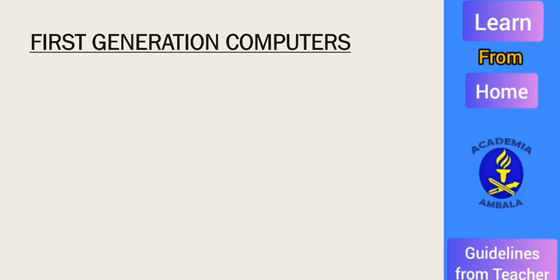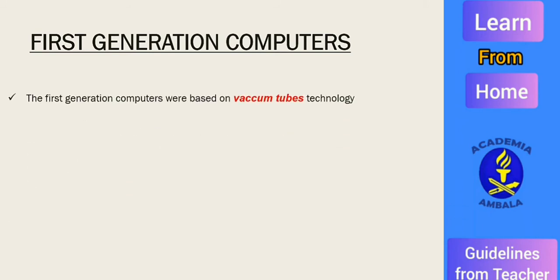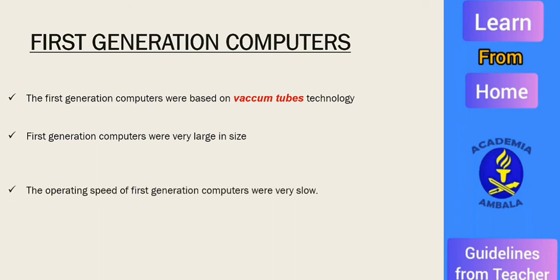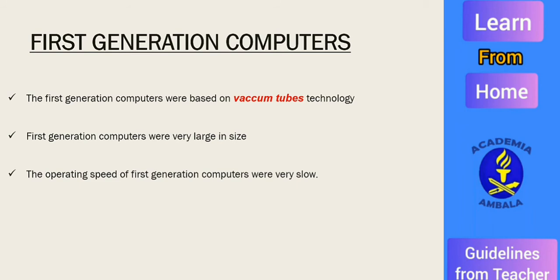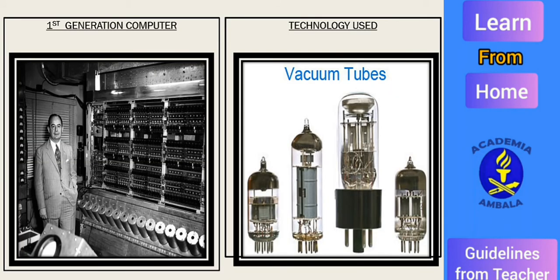Now we are going to see the characteristics of the generations of computers. First generation computers were based on vacuum tube technology. They were very large in size and generated a large amount of heat. Here you can see the image of first generation computers — how large they were — and the vacuum tubes technology used in them.